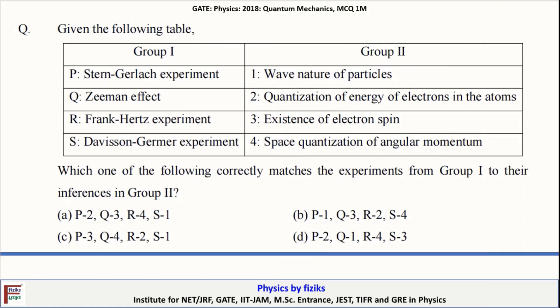A table is given and we have to identify the correct experiment and its inferences. The Stern-Gerlach experiment shows the existence of electron spin. Zeeman's effect shows the space quantization of angular momentum. The Franck-Hertz experiment shows the quantization of energy of electrons in an atom — that is experimental confirmation of Bohr's theory. The Davisson-Germer experiment shows the wave nature of particles. So P is with 3, Q is with 4, Franck-Hertz experiment is with 2, and S is with 1.